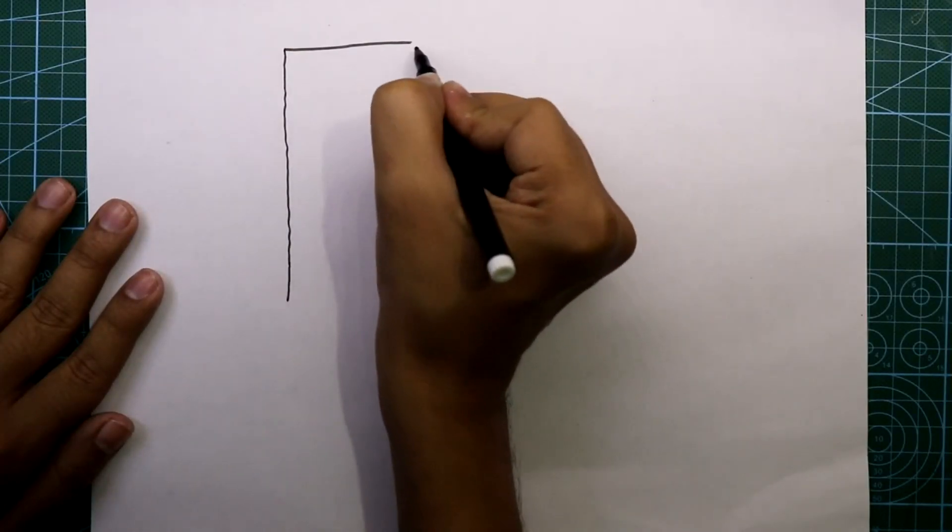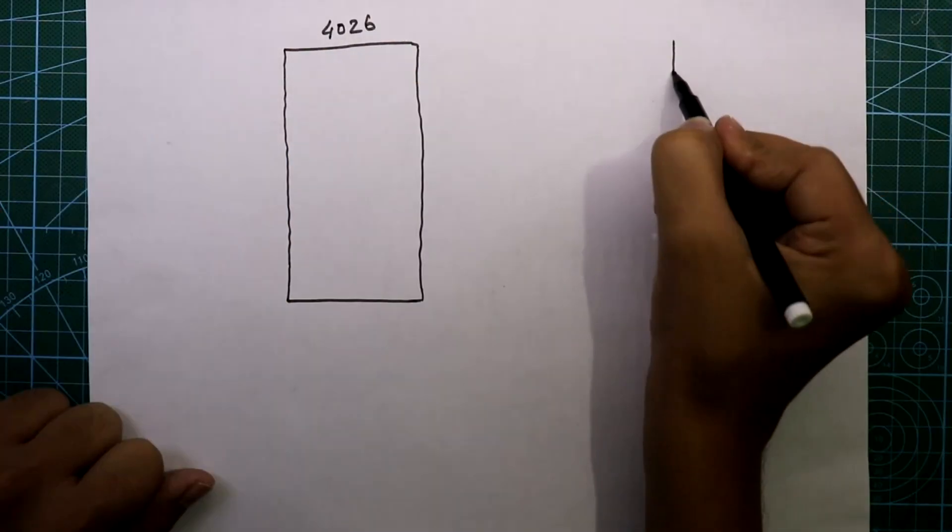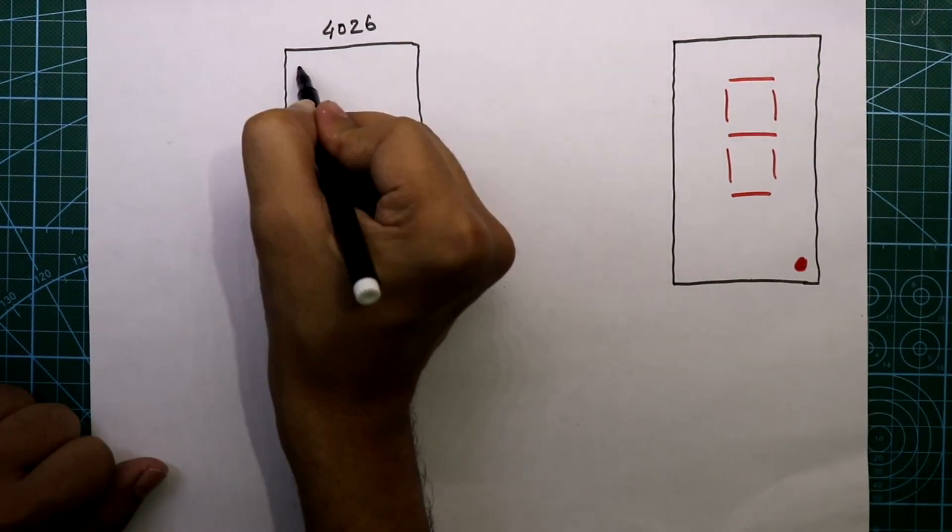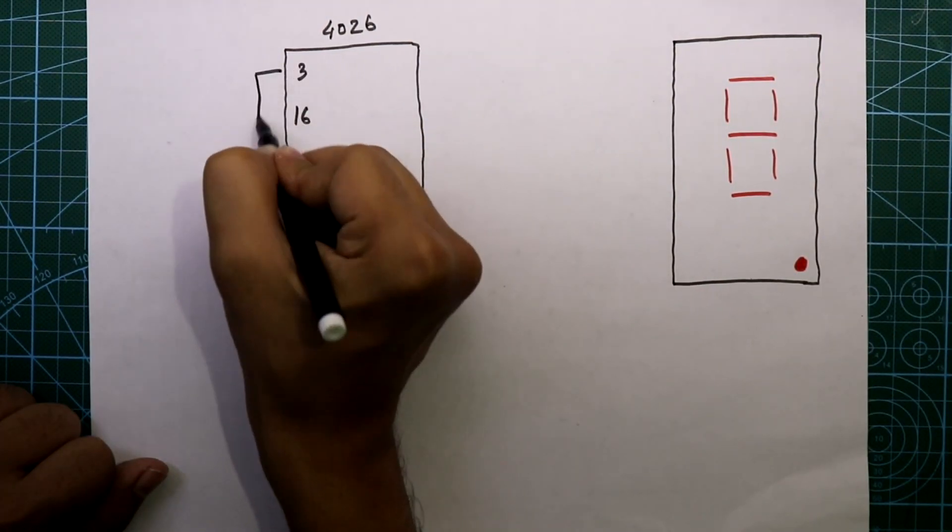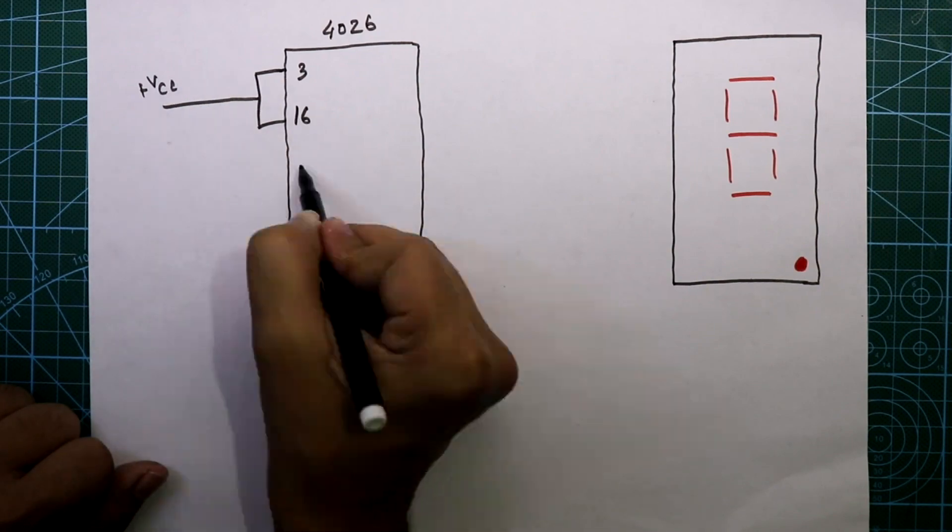For this we need IC 4026 and 7 segment display. Its pin 3 and 16 are connected to plus VCC, and pin 2 and 8 are connected to ground.